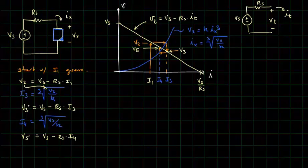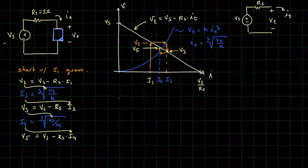And so we basically are taking subsequent previous computed values and plugging them in for the subsequent equation. When we do that for the problem, this is for the case where RS is 5 ohms, VS is 10 volts, and K is 5 times Ix cubed.